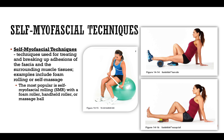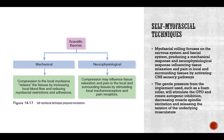SMR tools include foam rollers, handheld sticks, rumble rollers, lacrosse balls, tennis balls, and golf balls — all used to break up fascia. The mechanical component is that compression relaxes tissues. The neurophysiological component is that the compression influences tissues to relax, calling upon mechanoreceptors, pain receptors, and nociceptors, which essentially shut off — reducing the sensation of pain and allowing release.